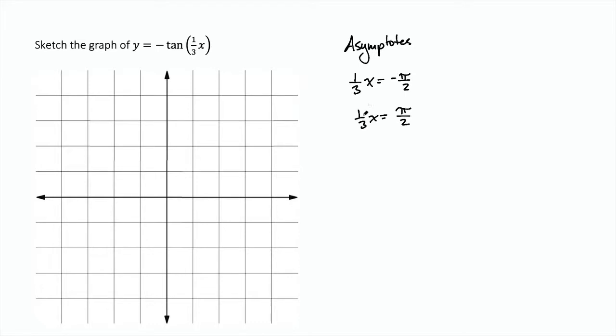So we multiply both sides by 3 for these, and we get x equals negative 3 pi over 2 and x equals positive 3 pi over 2.